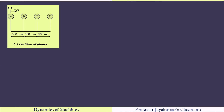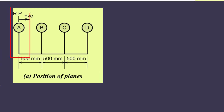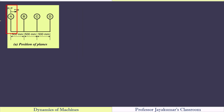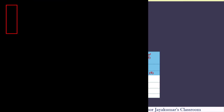Let us move on to step number two. We need to choose the correct reference plane. The thumb rule is to choose the plane in which we have many unknowns as the reference plane. So in this four rotor system, we need to determine mass Ma as well as theta A. Therefore, choose plane A as the reference plane. Any measurement towards the right of the reference plane is taken as positive, and towards the left we take it as negative.